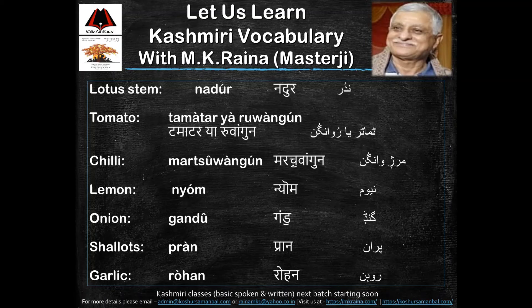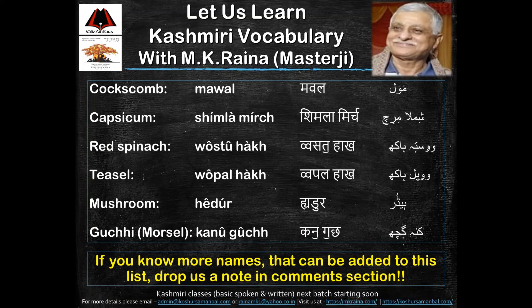Onion gau ganda; shallots gau pran; garlic gau rohan; coxcomb gau mawal; capsicum gai shimla mirich; red spinach gau wasta hak; dill gau wapal hak; mushroom gau hedur; gucchi gai kanaguch.